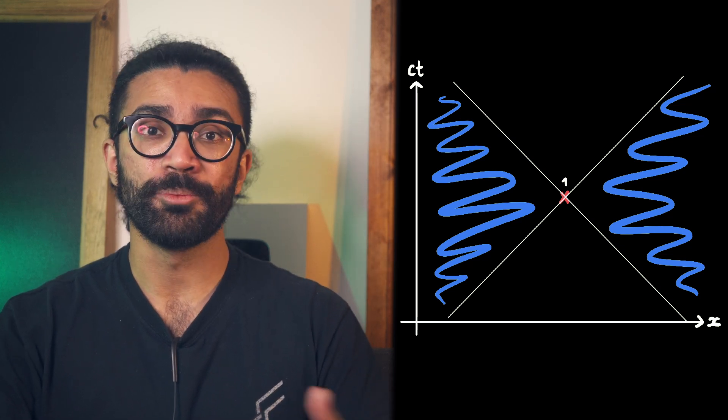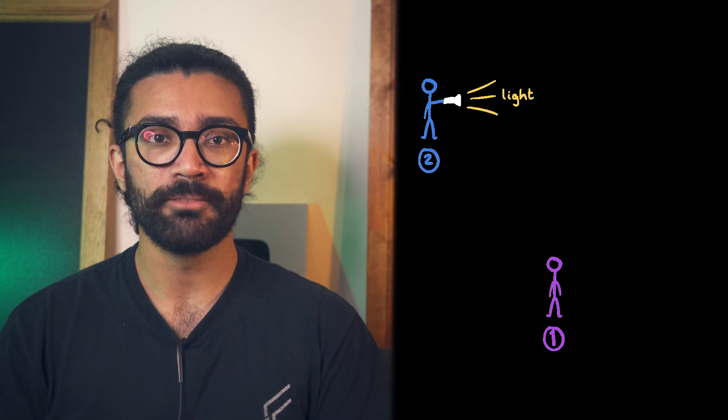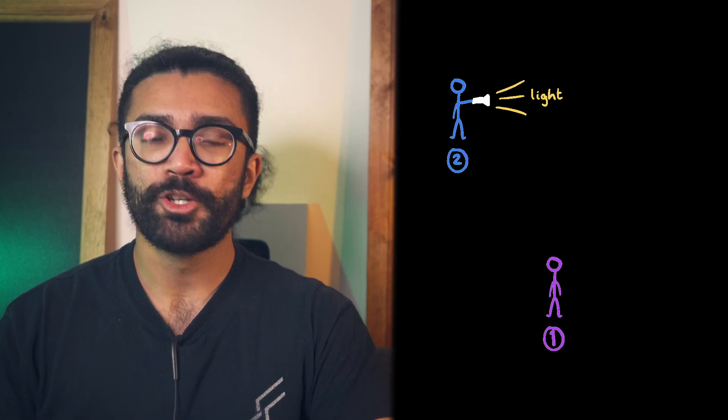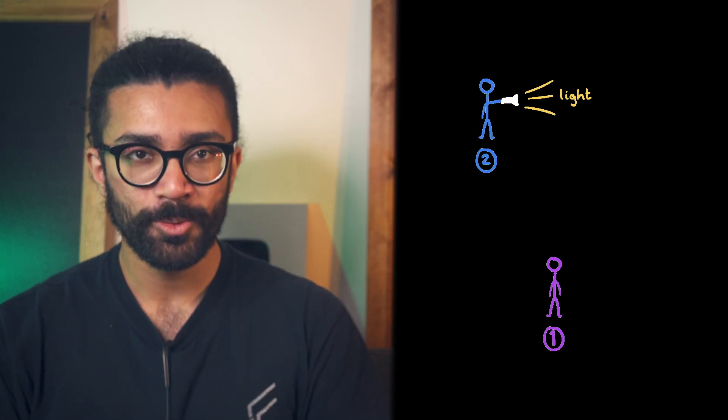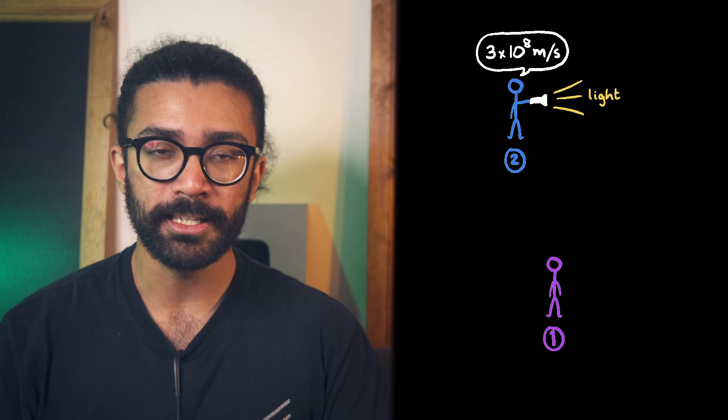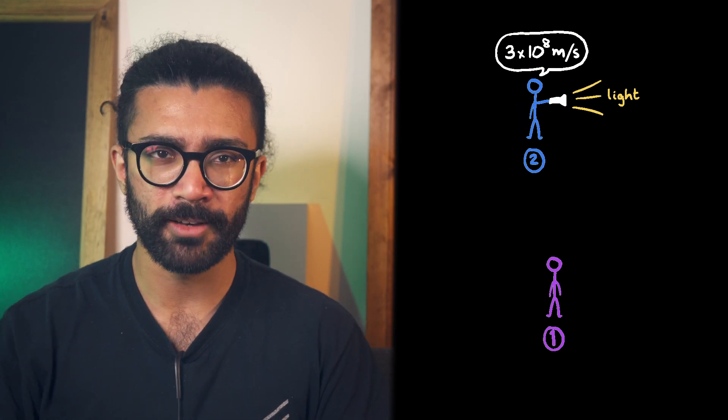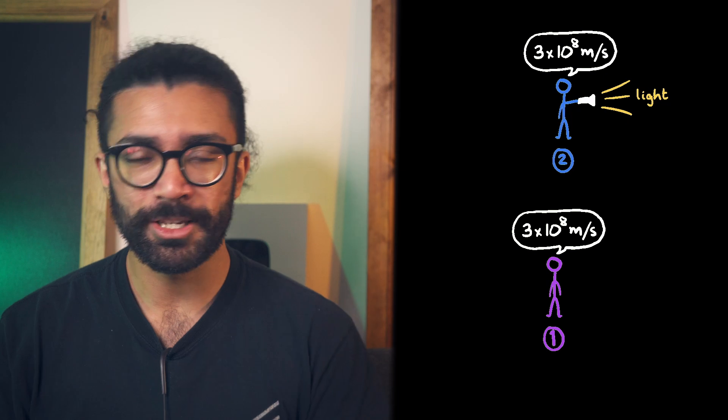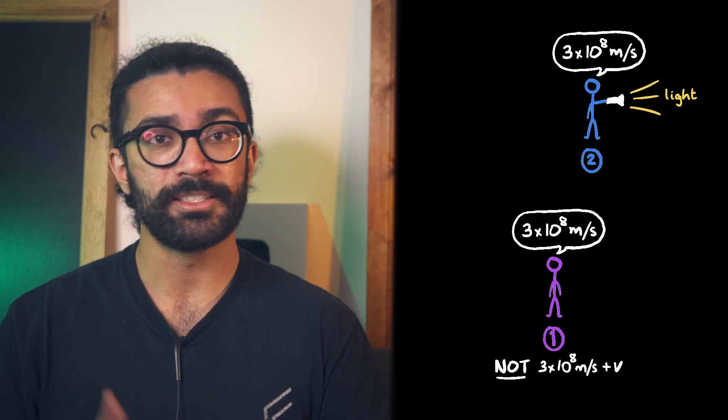Here's where things get even more interesting. In special relativity, not only is the speed of light the fastest speed possible, but it is also measured to be exactly the same by any observer. This means that two observers could be moving relative to each other. Let's say observer one is stationary in our current reference frame and observer two is moving in this direction with a flashlight. Assuming observer two is moving at a constant speed, observer two would measure the speed of light from the flashlight to be c, which makes sense. They're moving with the flashlight, but then observer one would also measure it to be c. They would not measure the speed of light to be c plus v,